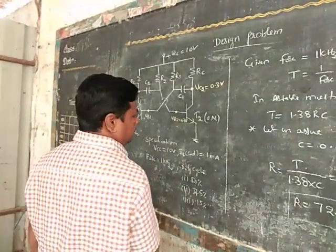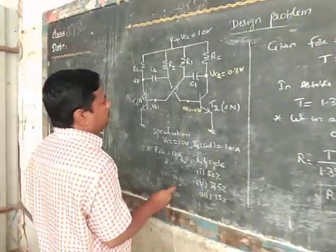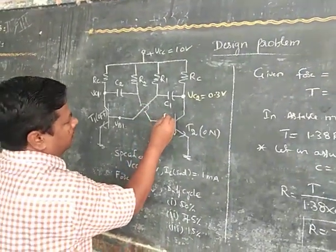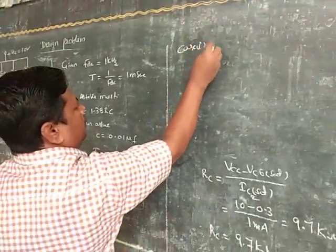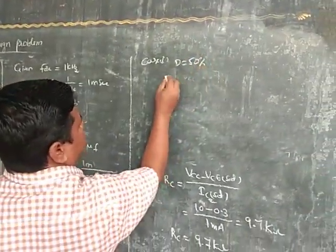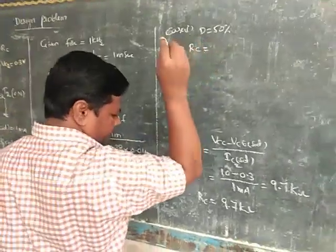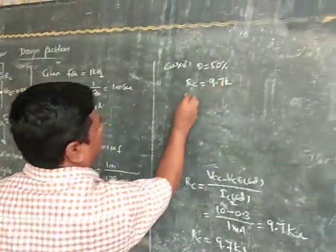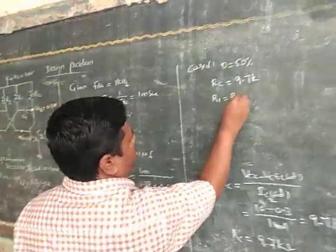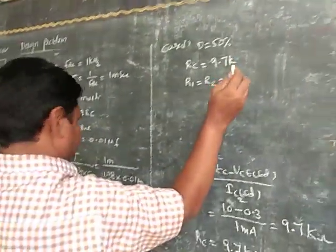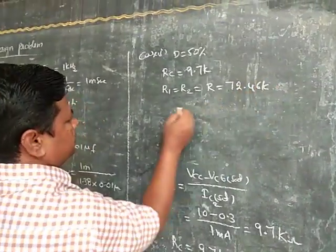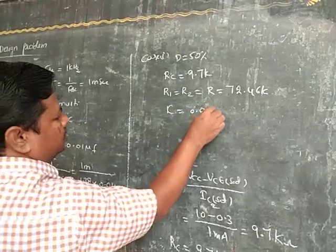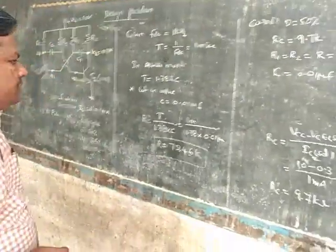This is the first case. In case 1, D is equal to 50% — symmetrical square wave. C1 is equal to C2. Summary: RC is equal to 9.7 kilo ohms, R1 is equal to R2 is equal to R, that is equal to 72.46 kilo ohms, and C is equal to 0.01 microfarad.